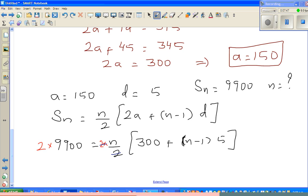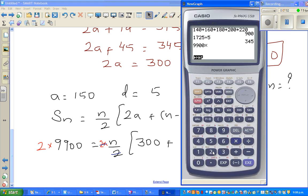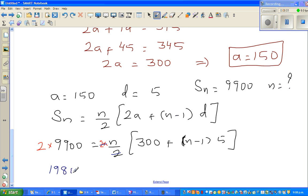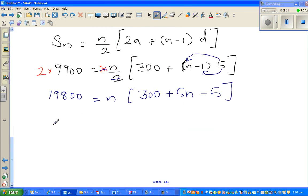So 9900 times 2 is 19800. So 19800 equals n times 300. Let me open the bracket: 5 times n gives you 5n minus 5. So n times 5 is 5n, and 5 times minus 1 is minus 5. This is a pretty lengthy example, but this is an excellence question. So this is 5n, and 300 minus 5 is 295n. This becomes 19800 equals 5n squared plus 295n.